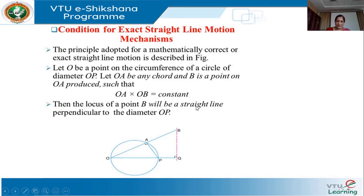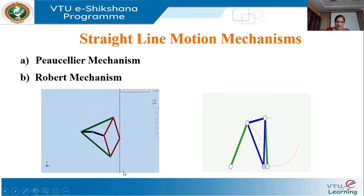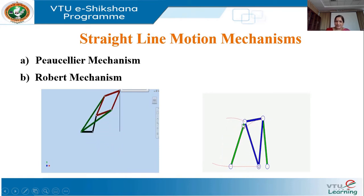If OA × OB equals a constant, then the locus of point B will be a straight line perpendicular to the diameter OP. This line traced by point B is perpendicular to OP, meaning it is an exact straight line. The animation confirms that it traces exactly a straight line.